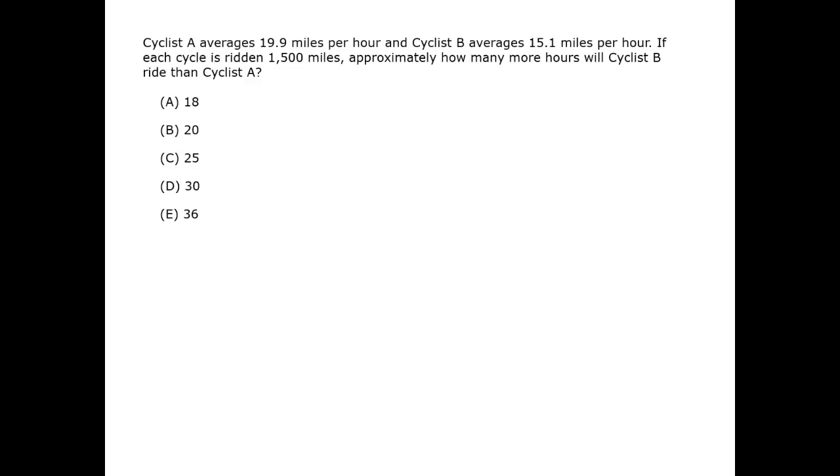Cyclist A, therefore, rides at a constant rate of 20 miles per hour. Without changing this rate, we want to get it to express the time for 1,500 miles. To do this, we can multiply the fraction by a version of 1.